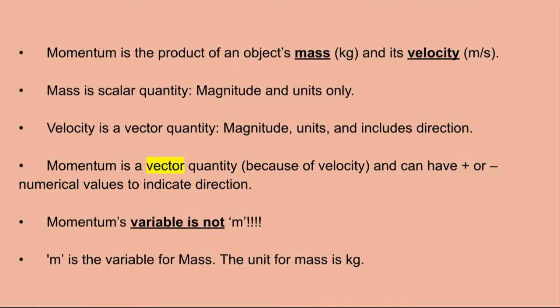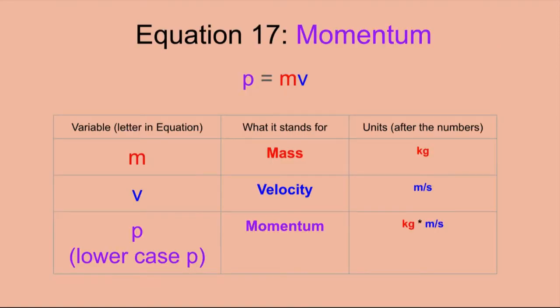Momentum's variable is not m — remember that variables are the letters you see in equations. M is the variable for mass, and the unit for mass is kg, for kilograms. In our formula sheet, momentum is equation number 17. It is p equals m times v. P stands for momentum — it's a lowercase p, not an uppercase P.